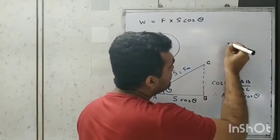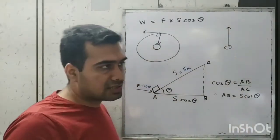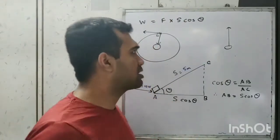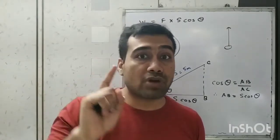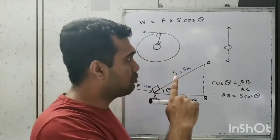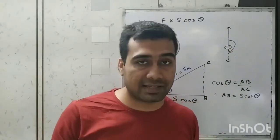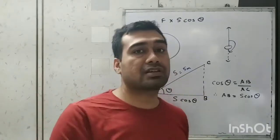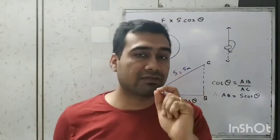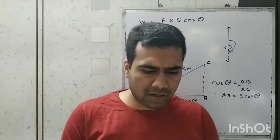When an object is thrown upwards, the displacement is the height. The muscular force is acting upwards and displacement is also upwards, so the work done by us is positive. However, the gravitational force acts downwards while the object moves upwards, so the angle between them is 180°. cos 180° = −1, so negative work is done by gravity — that's why the object slows down as it moves up.